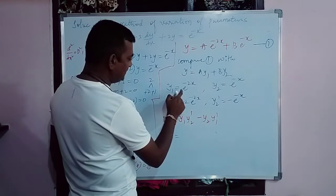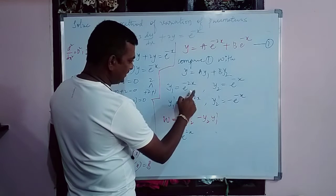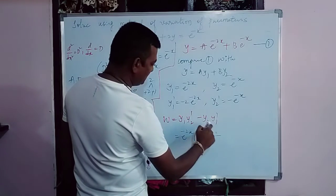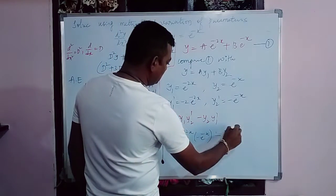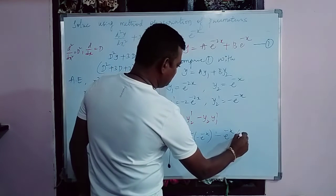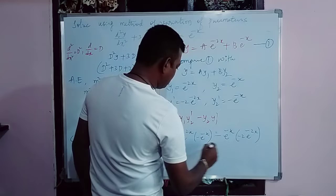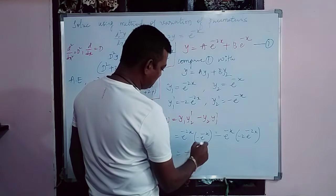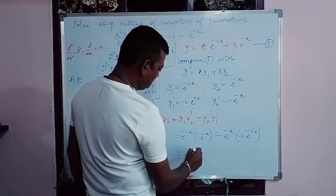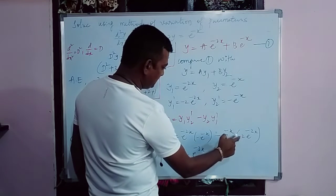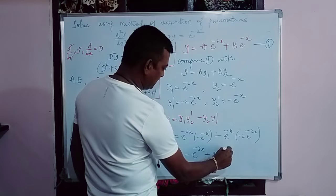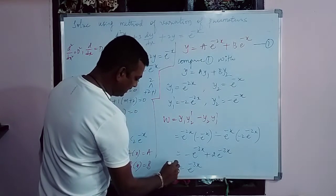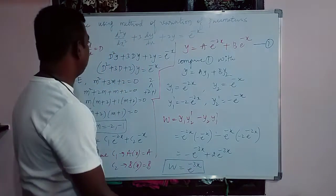Substituting: W = e^(-2x)·(-e^(-x)) - e^(-x)·(-2e^(-2x)) = -e^(-3x) + 2e^(-3x) = e^(-3x). So the Wronskian W = e^(-3x).